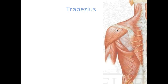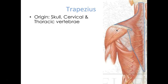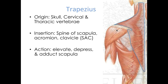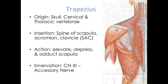Our first muscle is the trapezius, and this muscle is very much kite-shaped. If you imagine it on the right side of the body, you would see a kite shape. Also in this screencast I've listed the origins and insertions — let me quickly explain what those terms mean.